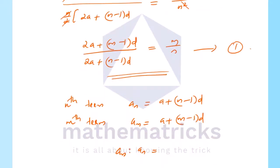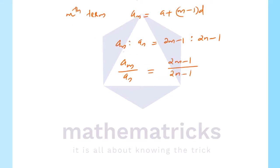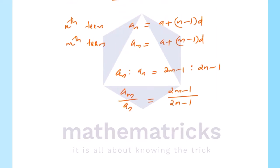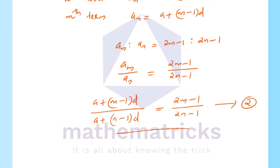That is am by an. am by an equals 2m minus 1 divided by 2n minus 1. That is: a plus m minus 1 into d, divided by a plus n minus 1 into d, equals 2m minus 1 divided by 2n minus 1. Now let's prove it — this is equation 2 to be proved.